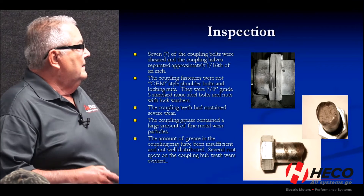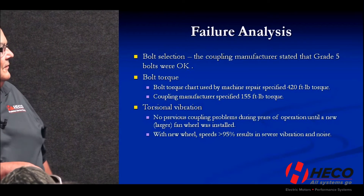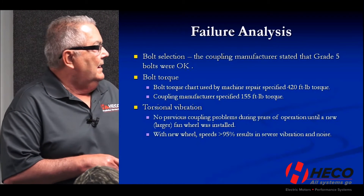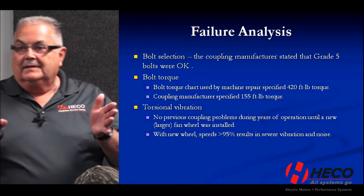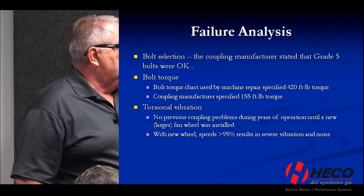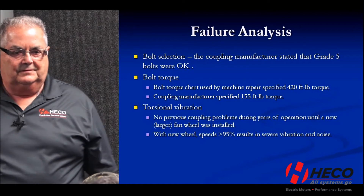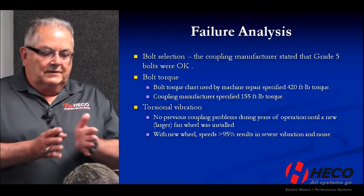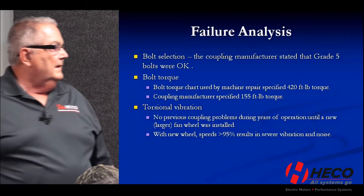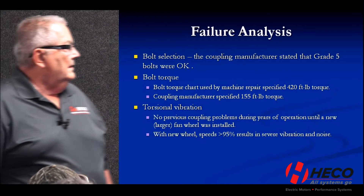We talked to the coupling manufacturer, who said that in a pinch, grade-five bolts could be used, as long as you followed the proper bolt torque chart. The pipe flange torque chart specified those bolts should be torqued to 420 foot-pounds. But the coupling manufacturer says the coupling bolts should be torqued to only 155 foot-pounds. They were massively over-torquing the bolts — with the additional stress from the coupling, they were simply over-stressing the bolts until they broke. So they re-torqued them correctly.